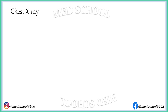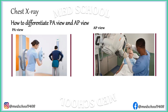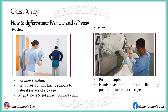If the projection is not mentioned or there is a chance of wrong labeling, how do we differentiate PA view and AP view? In PA view, the posture of the patient is standing, while in AP view the posture is supine. In PA view, hands rest on hips, taking the scapula to the lateral surface of the ribcage, while in AP view hands rest on the side of the body, so the scapula lies along the posterior surface of the ribcage. The X-ray tube is 6 feet away from the film in PA view, while in AP view the tube is only 4 feet away.